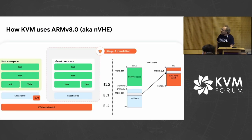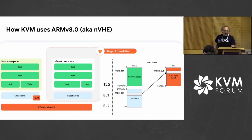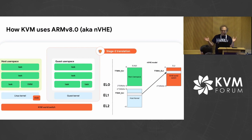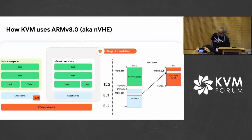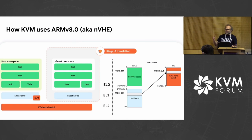How does KVM use that mode — we call it NVHE for obscure reasons? On the left side, we have the host: not a VM, but really the host user space and kernel, which use their own page tables. We have the KVM world switch, which runs at EL2. The guest runs in the middle of this diagram, wrapped by what we call stage-two page tables — the equivalent of EPT on x86. That provides the isolation we need.